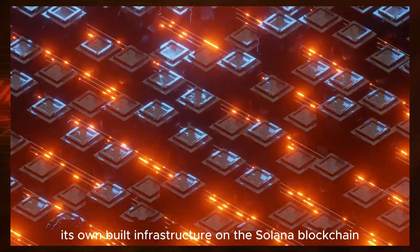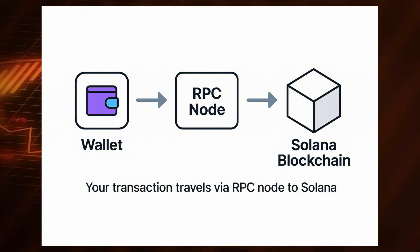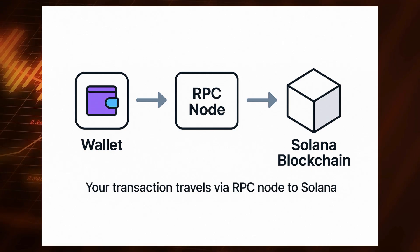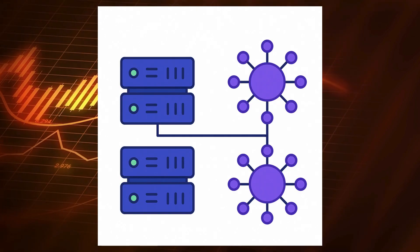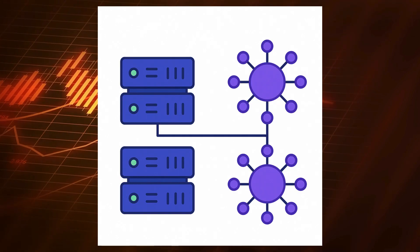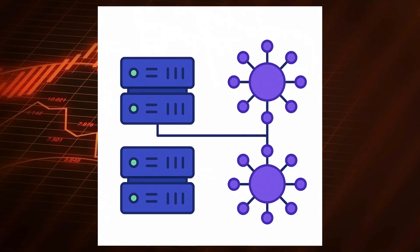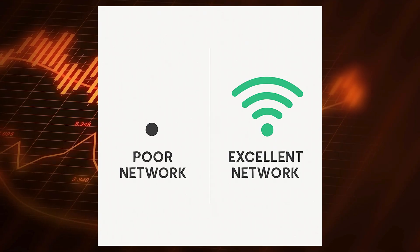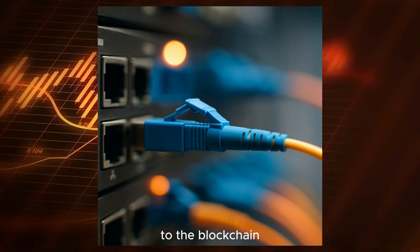Axiom has its own built infrastructure on the Solana blockchain that uses all these RPC nodes connected together. That's how all these DEXs work, and that's how all these RPC nodes are connected to the blockchain.